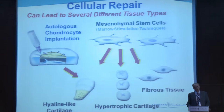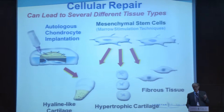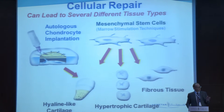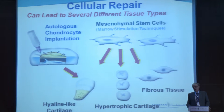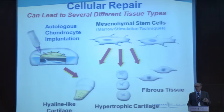As we look at the repair process, mesenchymal stem cells eluted from the marrow during marrow stimulation can lead to several different tissue types: hyaline cartilage, fibrous cartilage, or even hypertrophic cartilage. As Salter originally showed with CPM, hyaline cartilage starts forming at about 8 weeks, but with the load presented to the joint it turns to fibrocartilage and then fibrous tissue, affecting long-term durability. Whereas with chondrocyte implantation, chondrocytes can only grow up to be cartilage tissue — they can't become scar tissue. Other cells introduced from the joint fluid can still affect results.